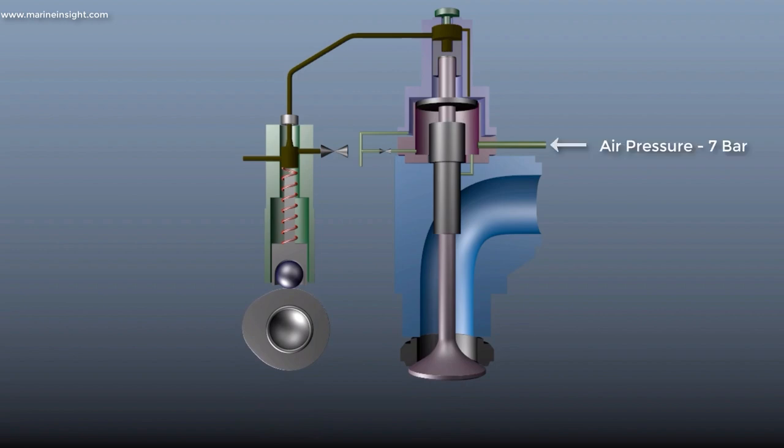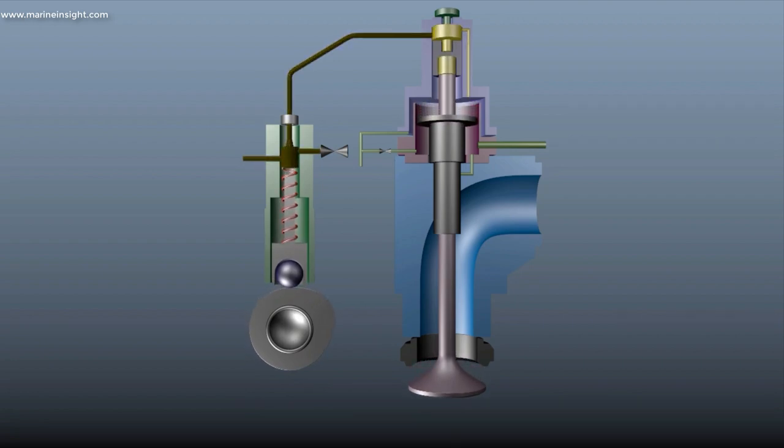The air pressure is approximately 7 bar to close the valve. The oil remaining in the hydraulic oil chamber is taken out from the drain valve when the valve is closing due to air pressure.